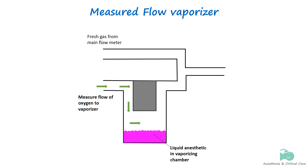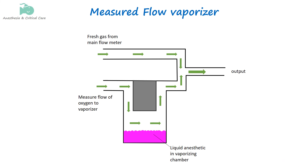In order to dilute this lethal concentration of anesthetic coming out of the measured flow, it is combined with the gases passing from the main flowmeter. So the operator has to set the flow to the vaporizer and bypass with separate flowmeters. This means that respective flows have to be calculated for each agent for a given temperature and vapor output.